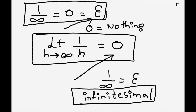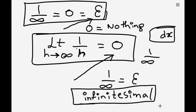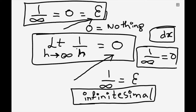We take the infinitesimal length like dx and integrate it. So before going to say that one by infinity is equals to zero, just make sure that it is not equals to zero — it's something which is very, very small.